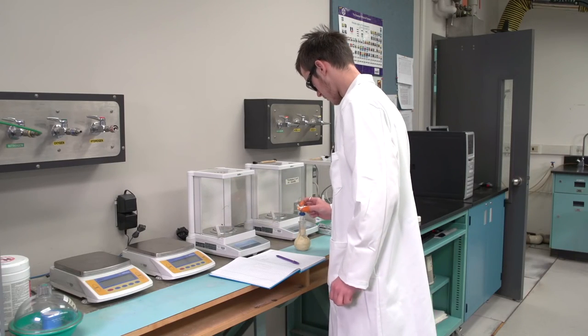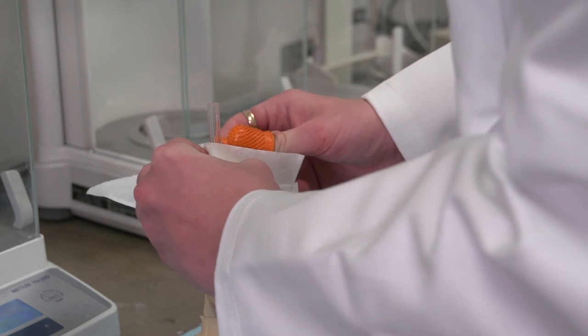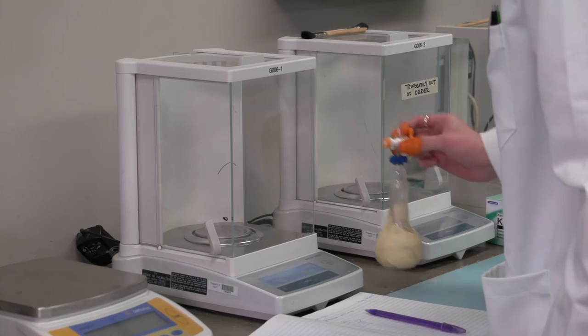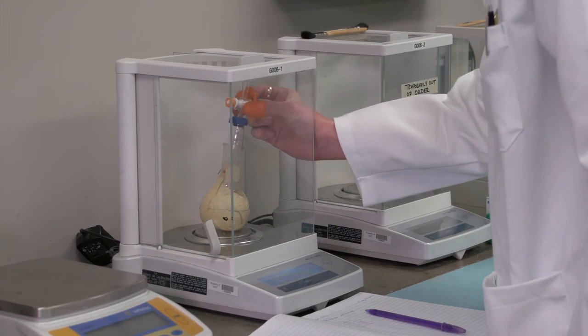Remove the bottle from the balance. To fill the bottle with air, open the stopcock. Determine the new mass on the balance.